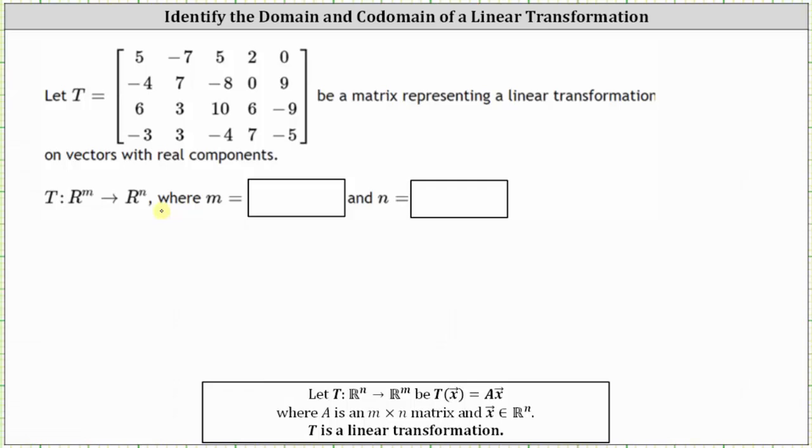To find the linear transformation, we find the product of matrix T and an input vector X, and the product will be an output vector, which we will call vector B. We can say each vector B is an image of vector X under T.